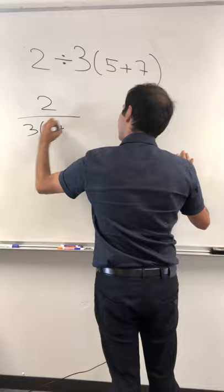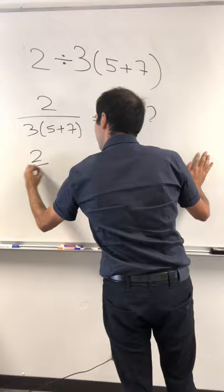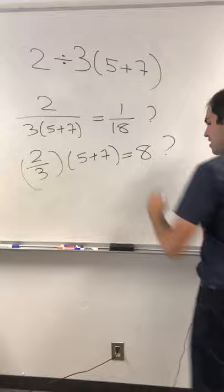Is it 2 divided by 3 times 5 plus 7, which is 1 over 18? Or is it 2 over 3 times 5 plus 7, which is 8?